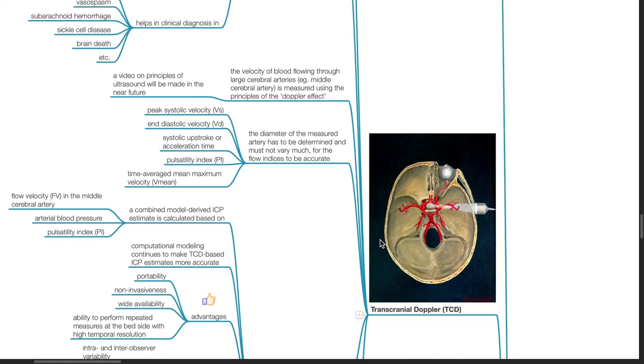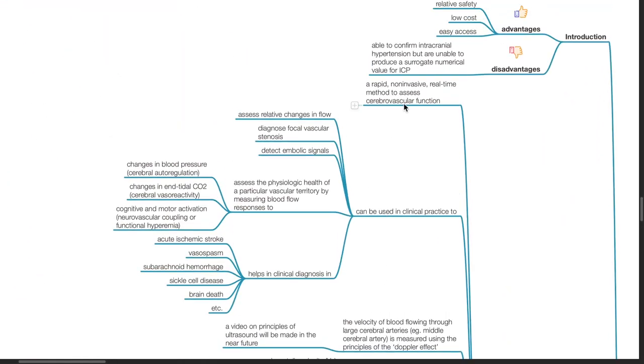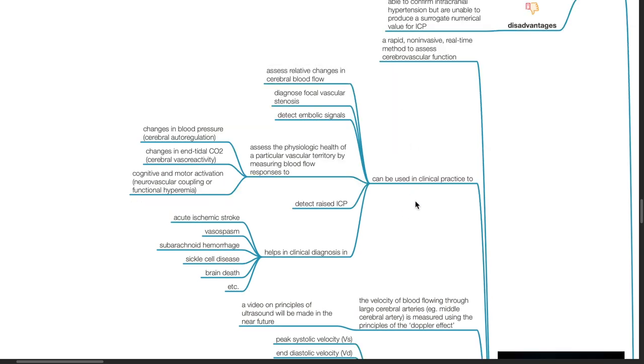Transcranial Doppler. It is a rapid non-invasive real-time method to assess cerebrovascular function and can also be used to assess ICP. It can be used in clinical practice to assess relative changes in cerebral blood flow, diagnose focal vascular stenosis, detect embolic signals, assess the physiologic health of a particular vascular territory by measuring blood flow responses to changes in blood pressure, changes in end-tidal CO2, and cognitive and motor activation. It can be used to detect raised ICP and helps in clinical diagnosis in acute ischemic stroke, vasospasm, subarachnoid hemorrhage, sickle cell disease, brain death, etc.